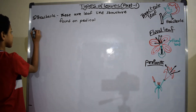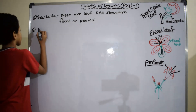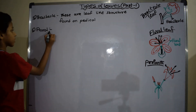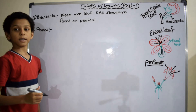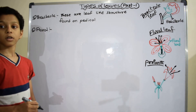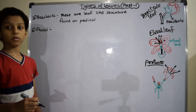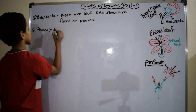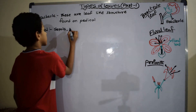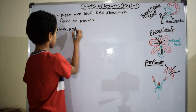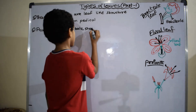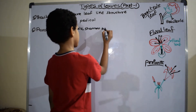Sixth one is floral leaves. Sepals, petals, stamen and carpel are found on flowers, which are included in this type of leaf.